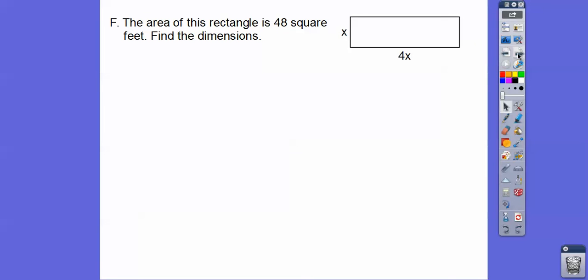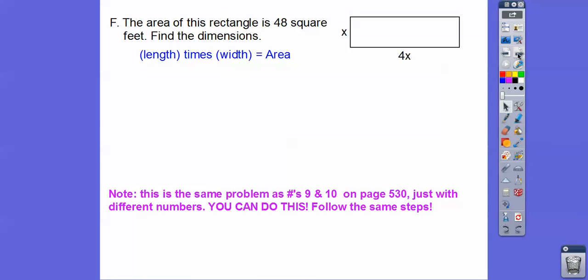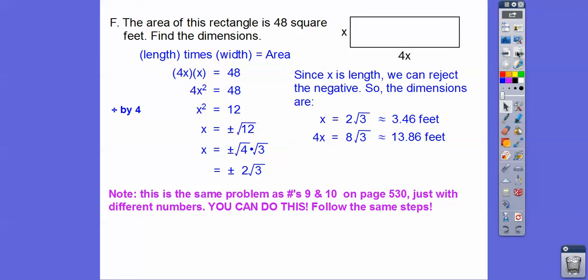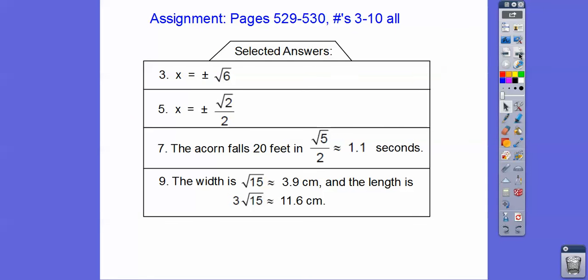One more, you guys. So the area of this rectangle is 48 square feet. Find the dimensions. And, of course, these are just like your numbers 9 and 10 on the page 530. So length times width equals area. So the length is 4x. The width is x. So 4x times x, which is 4x squared. Divide by 4. Don't forget to include your plus or minus. And then square root of 12 is 4 times 3. So the square root of 4 is 2, 2 root 3. And since we're talking about length, we don't need the negative because we can't have negative length. So x equals 2 root 3 and then 4x equals 4 times 2, which is 8 root 3. So about 3.46 feet by 13.86 feet. All right, if you guys are in our class, that would be your assignment. Take care.